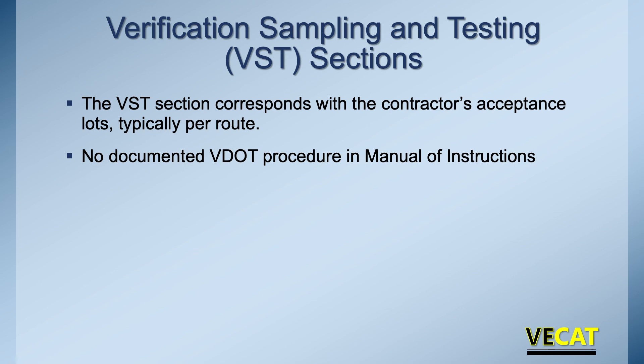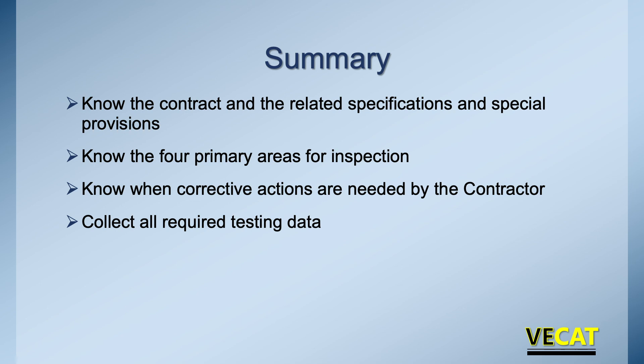To summarize: know the contract, related specs, special provisions, and copy notes. Know the four primary areas of inspection — they vary between cold in place and cold plant recycling — but at the end of the project confirm: is the depth right, and is density achieved? Know when corrective actions are needed — dosage rate problems, two consecutive failing sublots — and collect all required testing data for acceptance and payment. If you have any questions, please reach out to your moderator or facilitator.